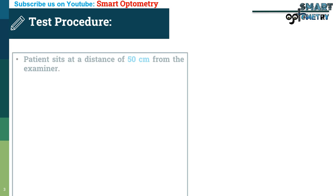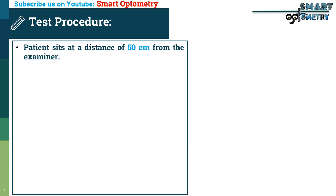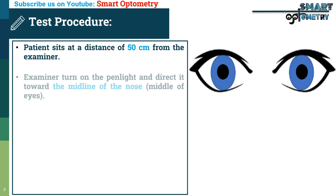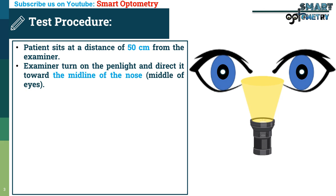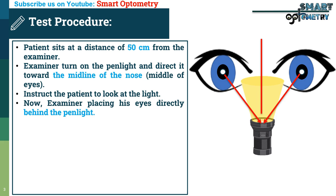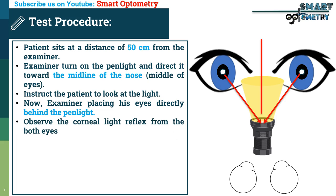Procedure of the test: The patient sits at a distance of 50 cm from the examiner. The examiner turns on the pen light and directs it towards the midline of the nose, i.e. the middle of the eyes, then instructs the patient to look at the light. The examiner places his eyes directly behind the pen light and observes the corneal light reflex from both eyes.